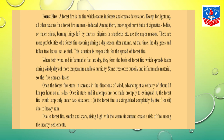Fire occurs when it is dry and hot season. In the rainy season or cold season, fire does not spread easily because everything is moist — wet wood does not catch fire easily, but dry wood catches fire quickly. At that time, dry grass and fallen tree leaves act as fuel. This situation is responsible for the spread of forest fire. When both vegetation and inflammable fuel are dry, they form the basis of forest fire, which spreads faster during windy days of high temperature and low humidity.